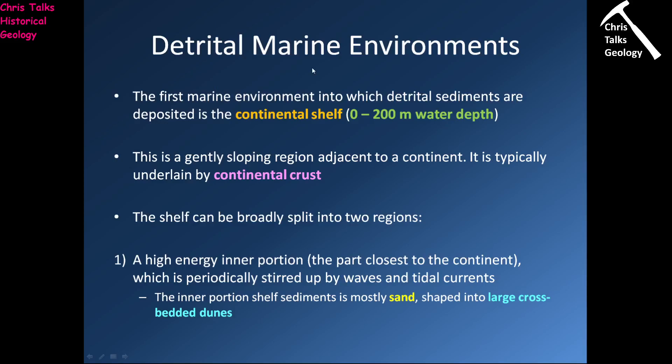Let's start with the detrital marine environment. The first one is the continental shelf, between 0 and 200 metres water depth, underlain by continental crust. The shelf is broadly split into two distinct regions. The first is the inner, higher-energy portion, closest to the coastline, which is periodically stirred up by wave action and tidal currents. This means the sediment in this area is being moved around quite actively.